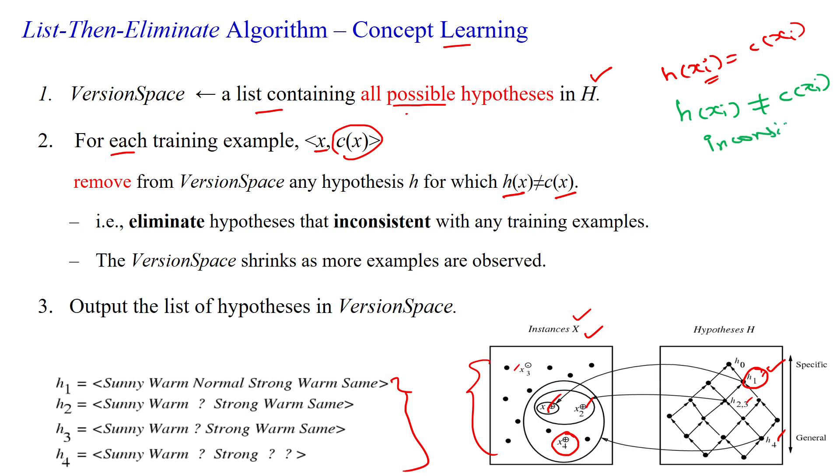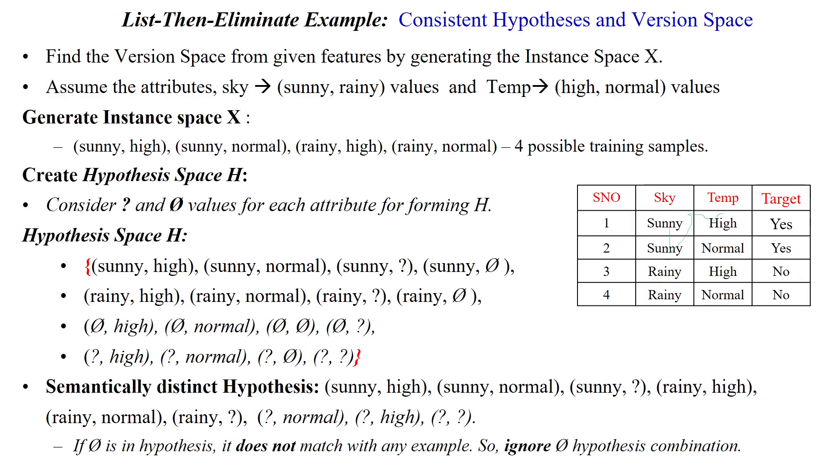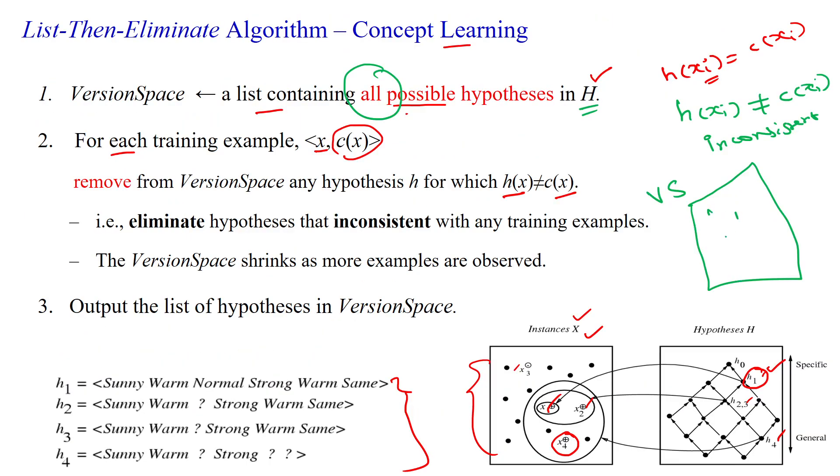So we have to remove this from the version space. Here, we have selected the version space which contains all the hypotheses available in H—that means all H1, H2, H3, H4 are in the version space.